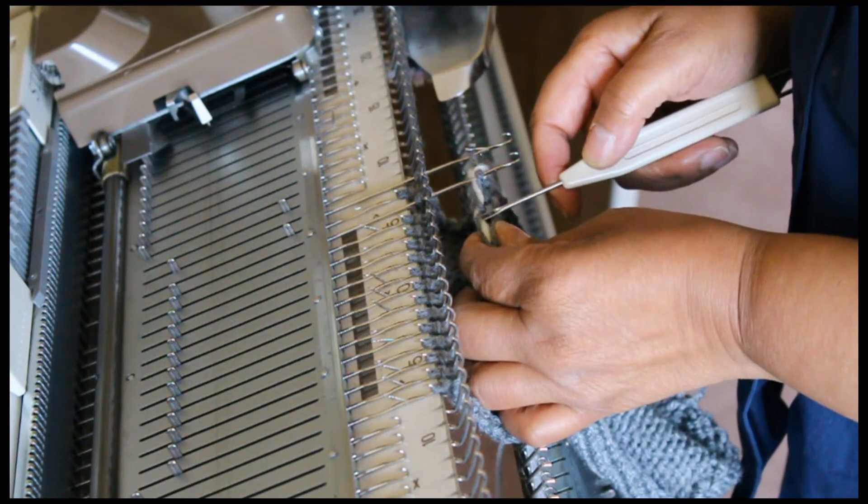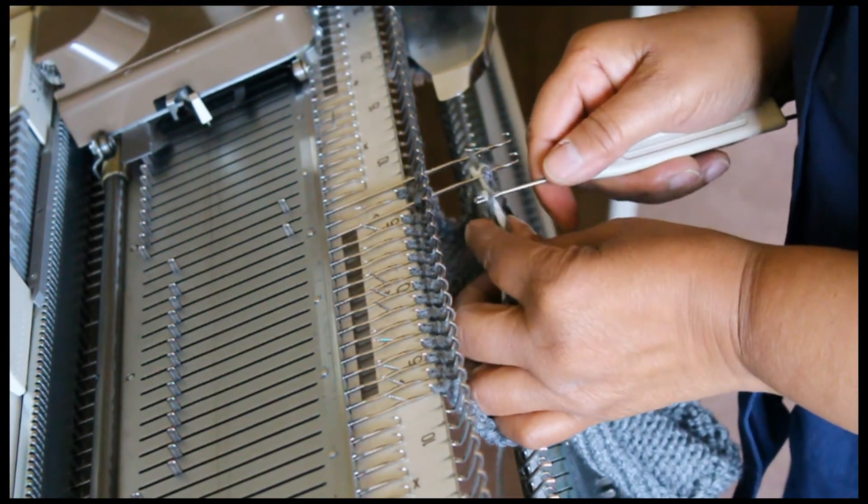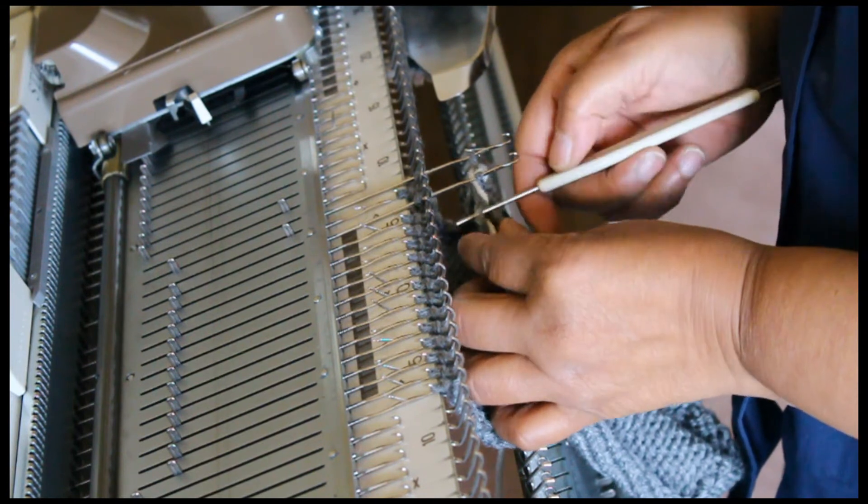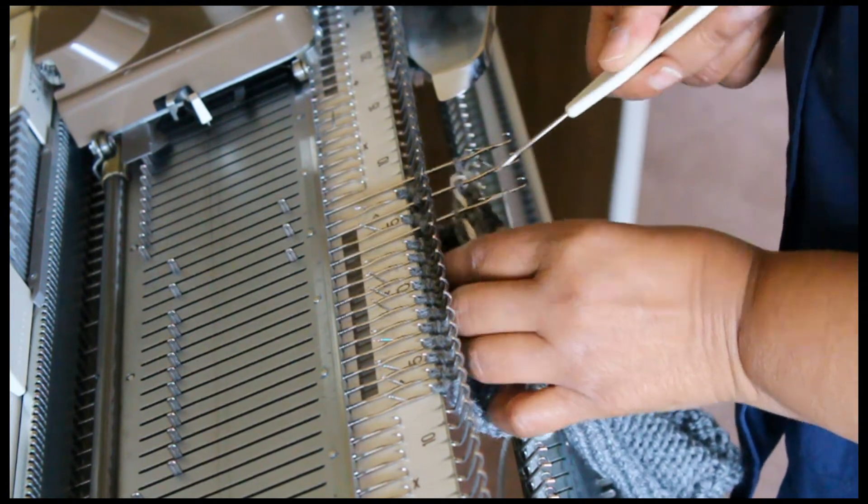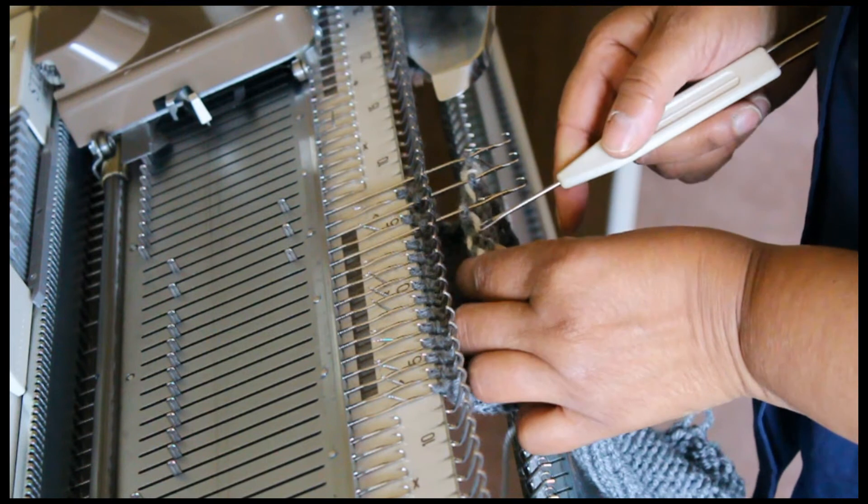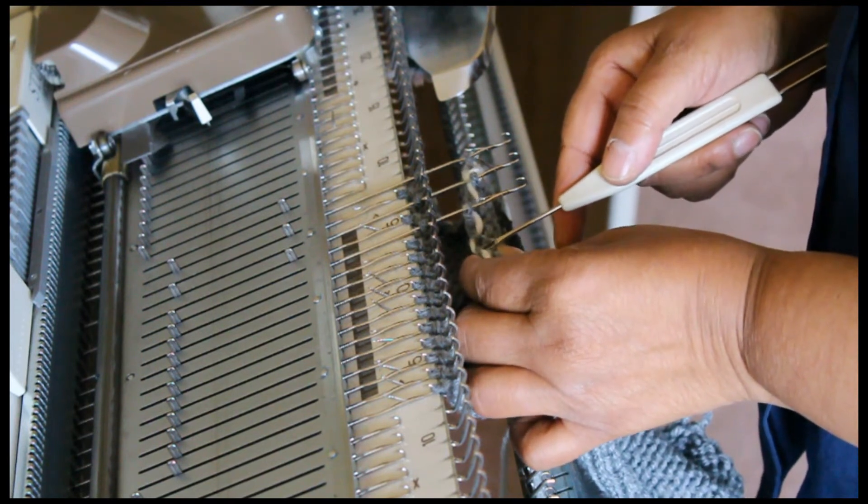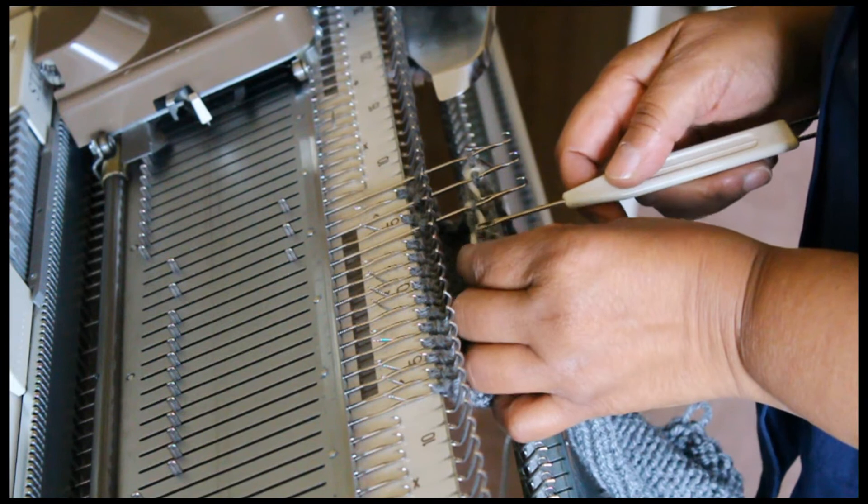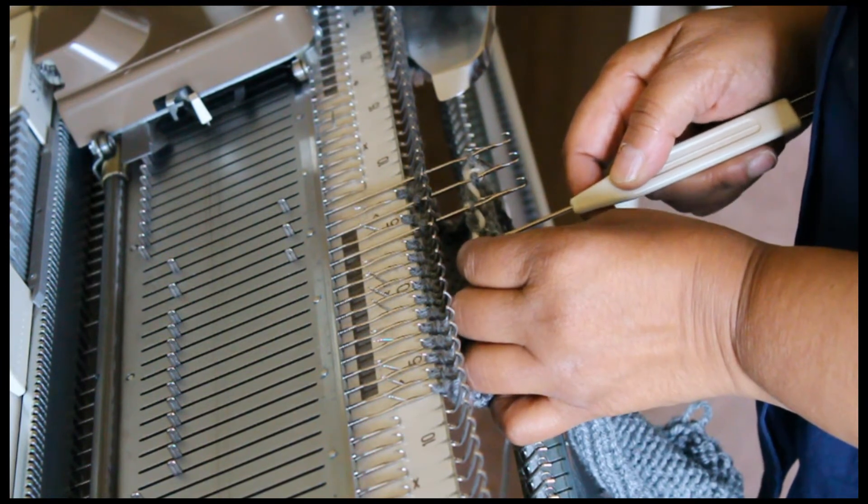Once completing hanging the stitches, you will knit one row and then bind off. And that's the end of the pattern instruction.